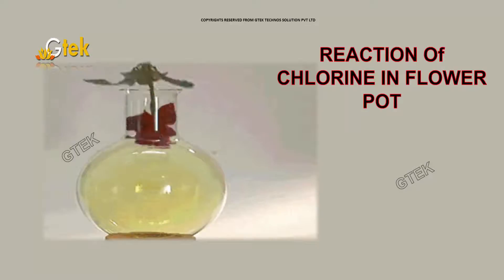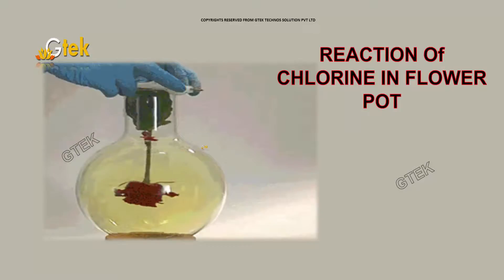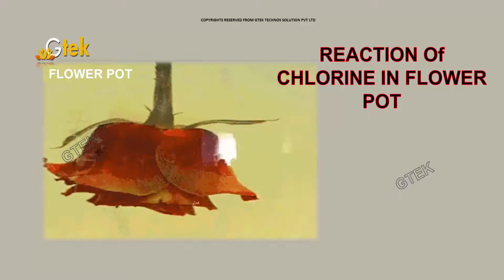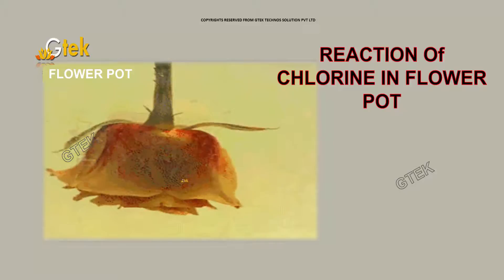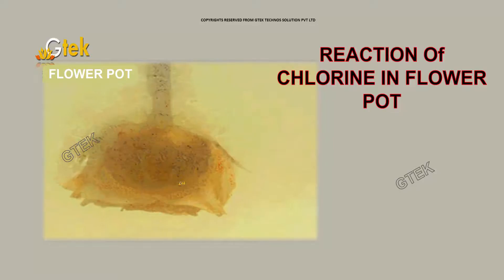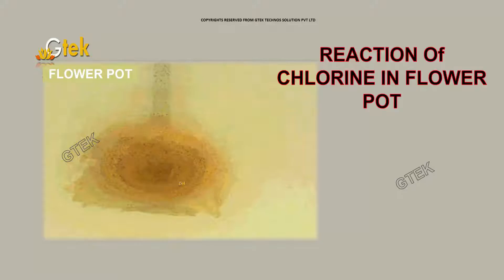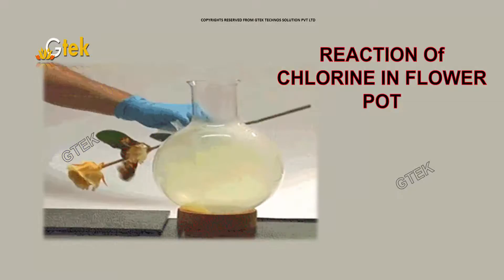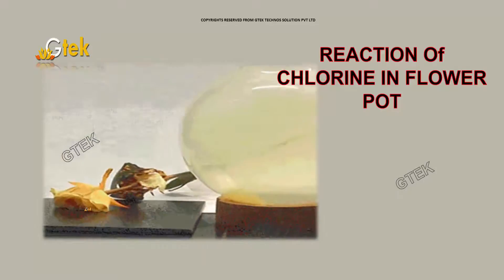Here is the reaction of chlorine in a flower pot. I have already shown you how the chlorine on the flower is reacting. You are able to see it — it's shrinking. The nature of the flower is gone. Now I am taking it out. Here is the flower — it's died.